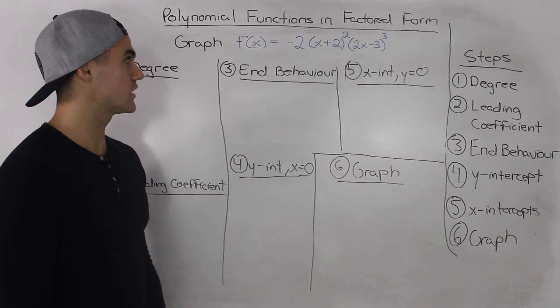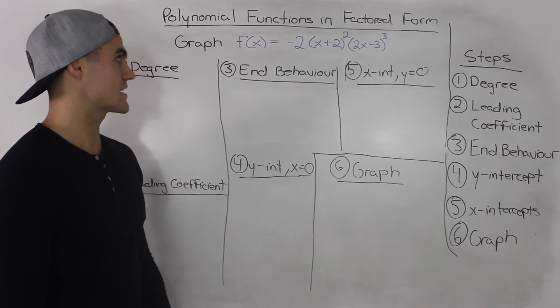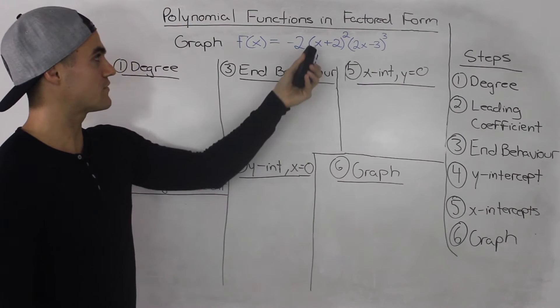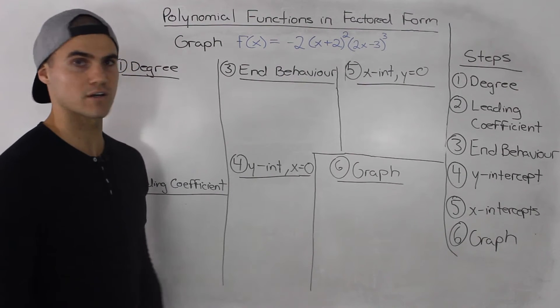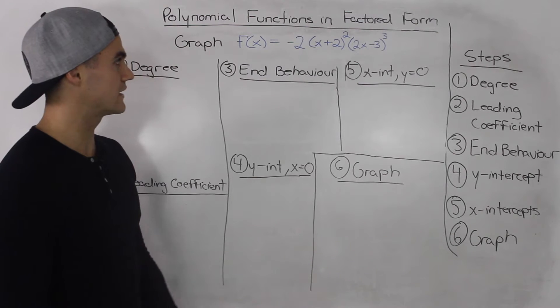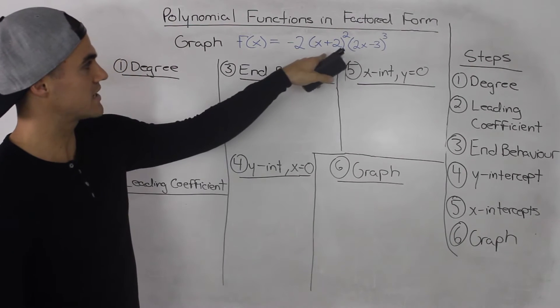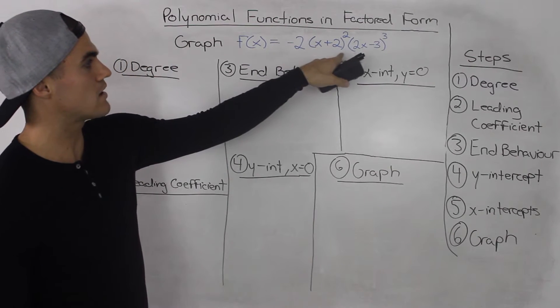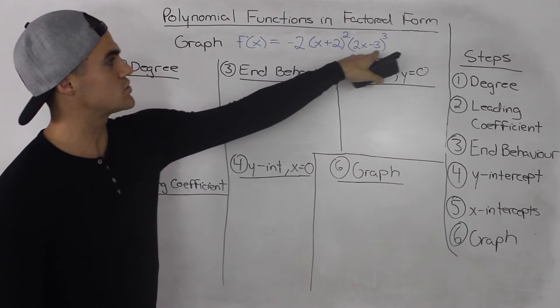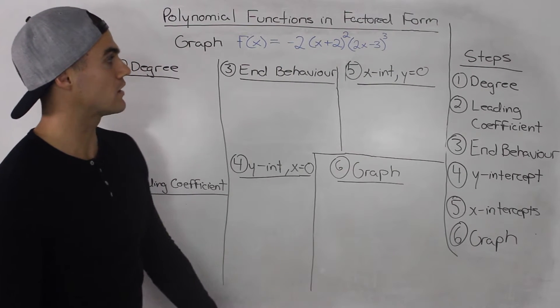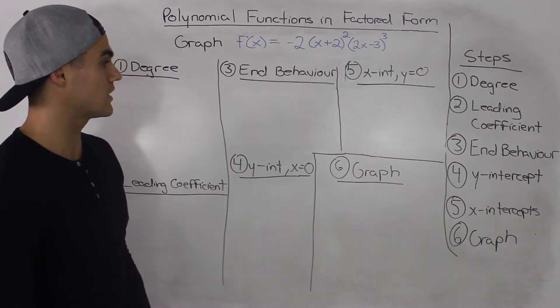What's up guys? Moving on to the next example, we've got to graph this polynomial function: negative 2 times x plus 2 squared times 2x minus 3 to the power of 3.